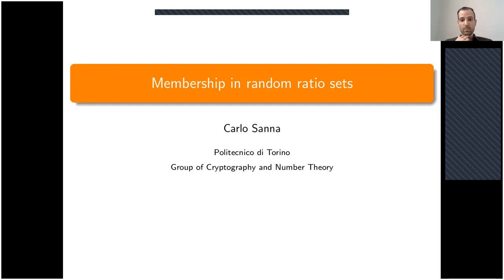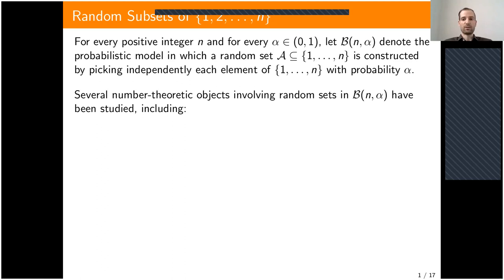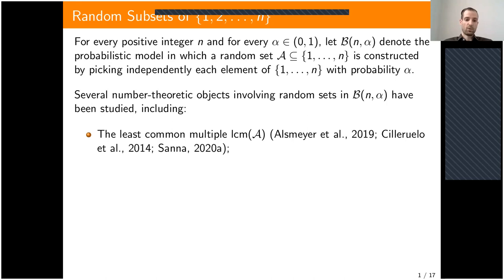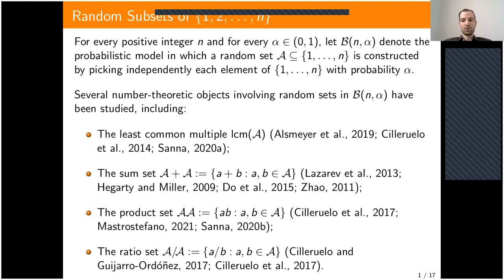Let n be a positive integer and α be between zero and one. We denote by B(n, α) the probabilistic model in which a random set A is constructed by picking independently each element of {1, 2, …, n} with probability α. Several number-theoretic objects involving these random sets have been studied, including the least common multiple of the elements of A, the sum set A+A, the product set A·A, and finally the ratio set A/A, which is the set of all fractions having numerator and denominator both in A.